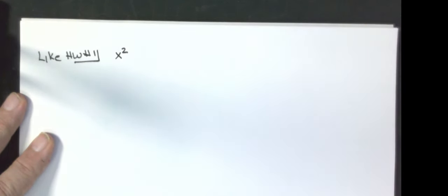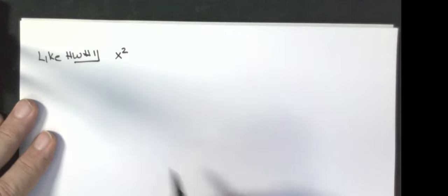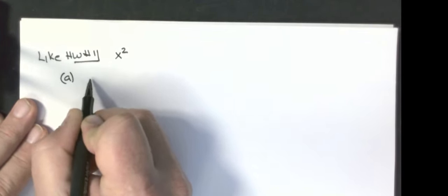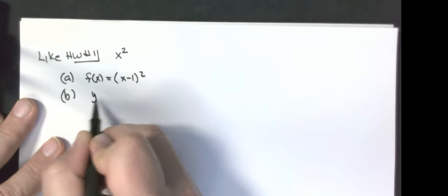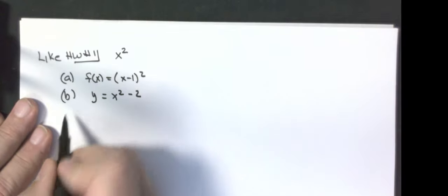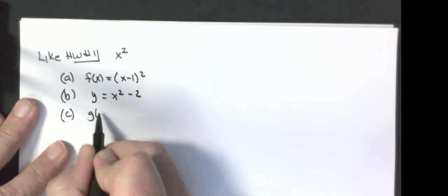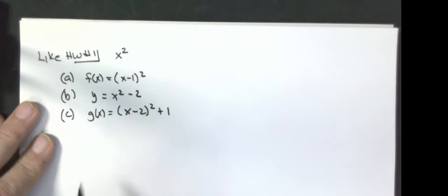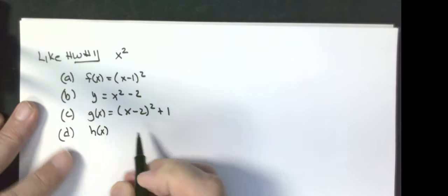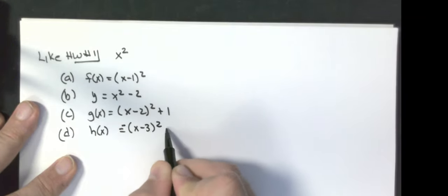An example, your homework problem number one. I'm going to do one like it. They want you to graph x squared accurately and then graph the following functions. I'm going to do some that are slightly different. A, f of x equals x minus one squared. B, y equals x squared minus two. C, g of x equals x minus two squared plus one. And D, h of x equals negative x minus three squared minus two.